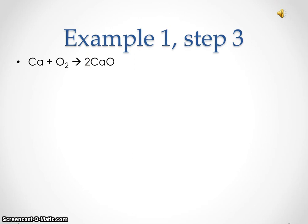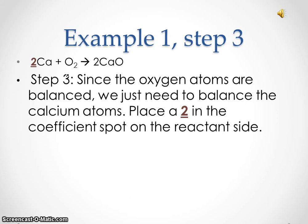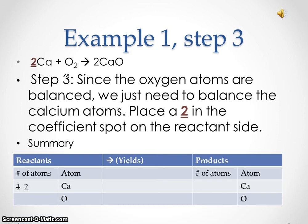Example one, step three. We added a two coefficient on the product side. Since the oxygen atoms are balanced, we just need to balance the calcium atoms. Place a two in the coefficient spot on the reactant side. Now on the reactant side we have two calcium atoms and two oxygen atoms. On the product side, we have two calcium atoms and two oxygen atoms. Balanced!